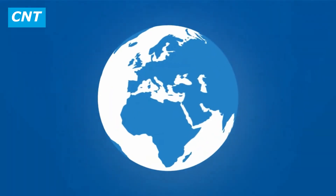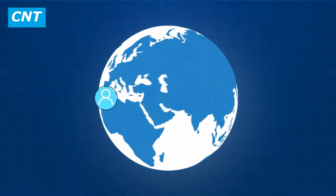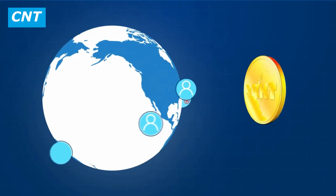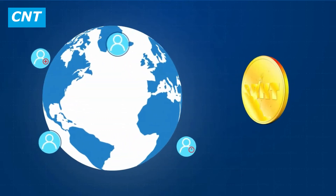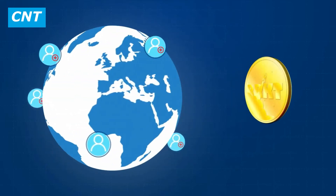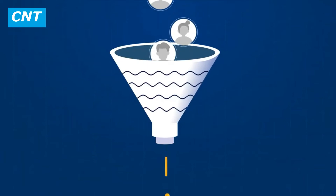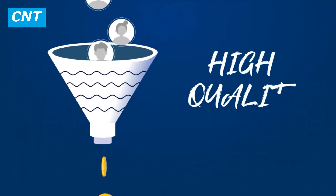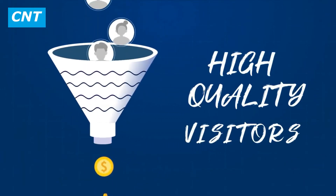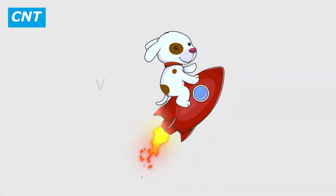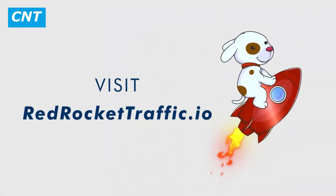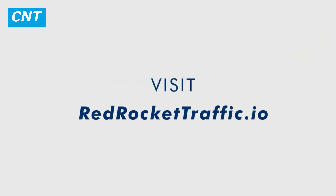Real users, real views, real clicks — our traffic is distinctively powered by our users. Each of our ad visitors earns the RRKT token for their time. Red Rocket Traffic guarantees that high-quality visitors visit your website for 30 to 60 seconds. It's free to join — visit RedRocketTraffic.io and get real traffic just like that.